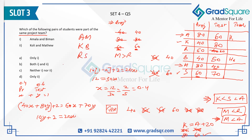Looking at the answer options: A and B were not in the same project team — no. K and M were not in the same project team — no. So neither option one nor option two is correct, giving us the answer. This concludes the set. Three questions could be answered from the table alone, and two required calculating the weights. Even without the weights, three out of five questions are still answerable.